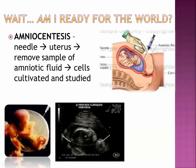Amniocentesis — the amniotic fluid actually contains the baby's cells in there, so you can actually check to see the number of chromosomes by doing a karyotype — K-A-R-Y-O-T-Y-P-E — to find out if there are any genetic issues. Down syndrome is one that is commonly identified using amniocentesis.